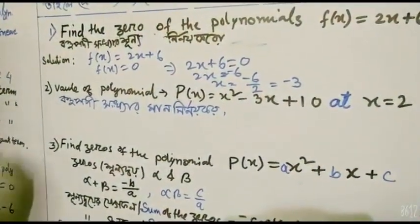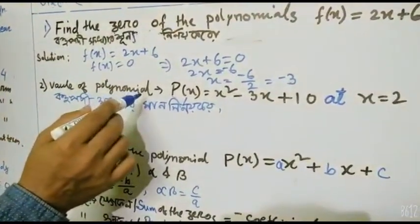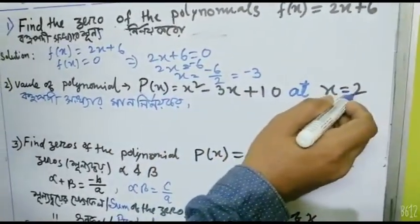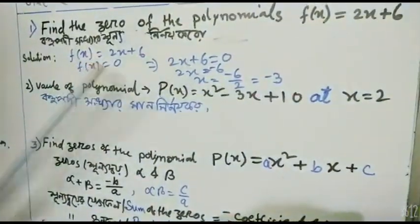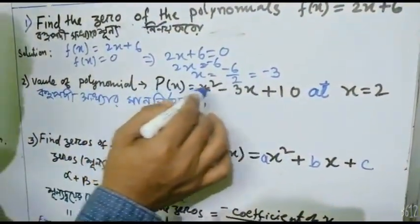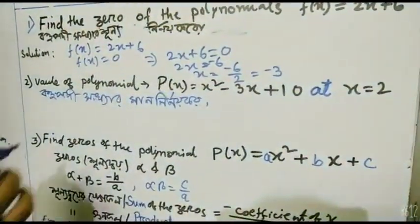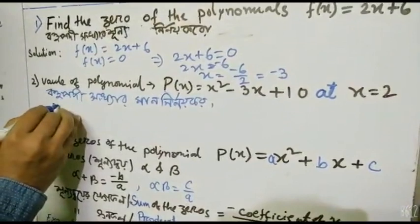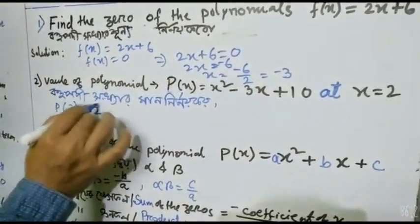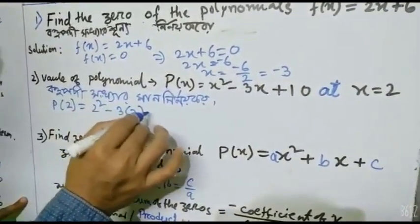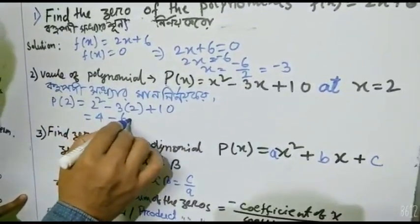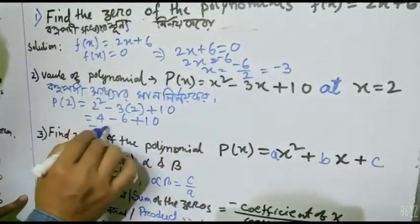Now, value of polynomial. Suppose p(x) = x² - 3x + 10. At x = 2, p(2) = 2² - 3×2 + 10 = 4 - 6 + 10 = -2 + 10 = 8.